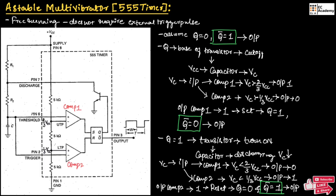Once the transistor is turned on, the capacitor discharges and the voltage across the capacitor reduces. Since capacitor voltage appears as input to both comparators, in comparator 1 Vc will be less than 2/3 Vcc, so comparator 1 output will be 0. At comparator 2, Vc will be less than 1/3 Vcc, so comparator 2 output will be 1. Since comparator 2 output is 1, that will reset the SR flip-flop. Hence Q will be equal to 0 and Q bar will be equal to 1, so 1 will appear across the output and the output will move to high state.